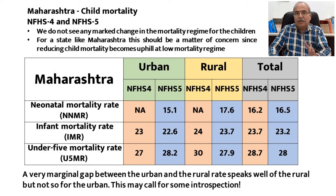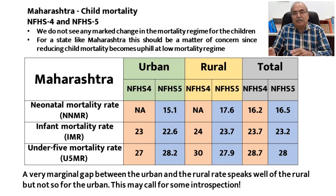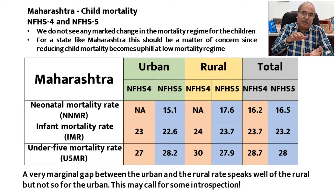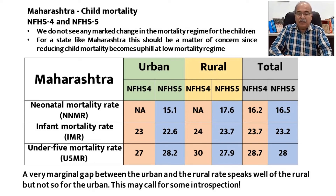We also need to look at what NFHS tells us regarding child mortality — basically three components: neonatal mortality, infant mortality rate, and under-5 mortality rate. Here, we do not see any marked change in the mortality regime for children. For a state like Maharashtra, this would be a matter of concern, because as different segments of child mortality start coming down, the climb becomes steeper and more uphill, requiring more effort. A second worrying factor is that the gap between urban and rural mortality is very marginal for Maharashtra.